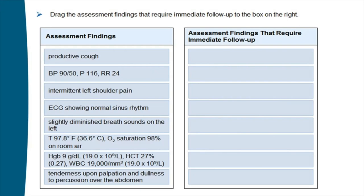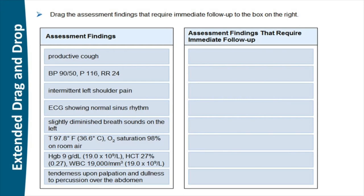The first item says: 'Drag the assessment findings that require immediate follow-up to the box on the right.' The test taker still has all those tabs on the other side of their screen. This item type is called extended drag and drop — the same drag-and-drop format used on today's NCLEX, but with more choices. This is a theme: item types we have today weren't quite sufficient for measuring clinical judgment, so in some cases we extended them.